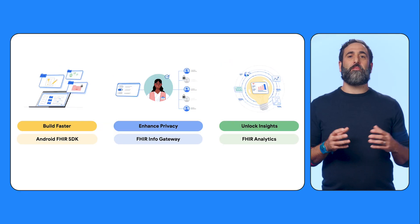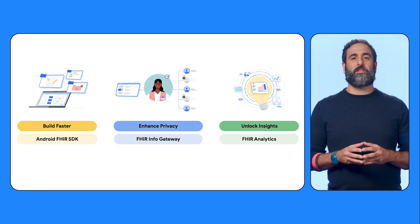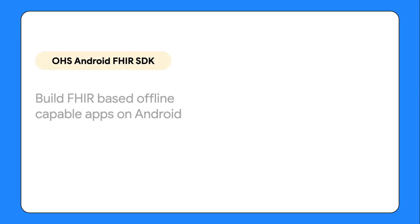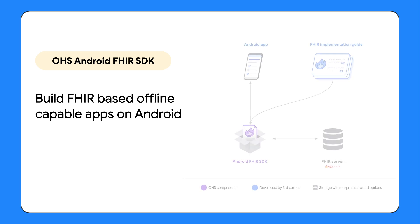Let's take a closer look at each of the components. First up, the Android FHIR SDK — a set of libraries for working with FHIR on Android. Using the Android FHIR SDK, developers can quickly and easily build powerful offline-capable FHIR-based applications that can synchronize with any FHIR server. Use FHIR questionnaires and extensions for defining Android UI for data collection, validation, and processing. Deploy app content as FHIR implementation guides, and access advanced capabilities for building apps that can generate evidence-based care plans and calculate clinical quality measures, all on device.